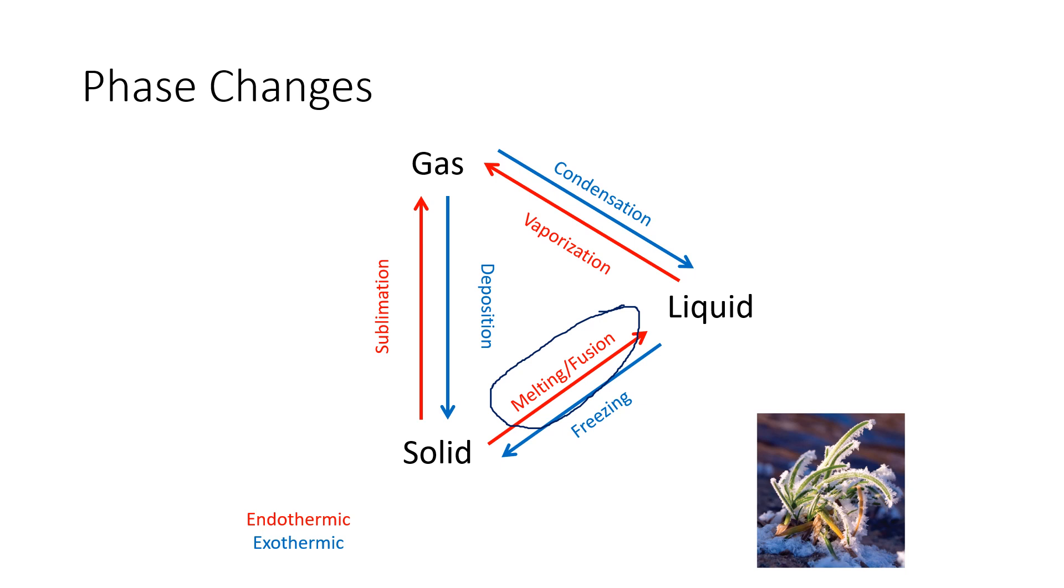If we go in the opposite direction and a liquid turns into a solid, we're going to call that freezing. If we have a liquid turning into a gas, we're going to call that vaporization. And whenever a gas turns back to a liquid, we'll call that condensation.